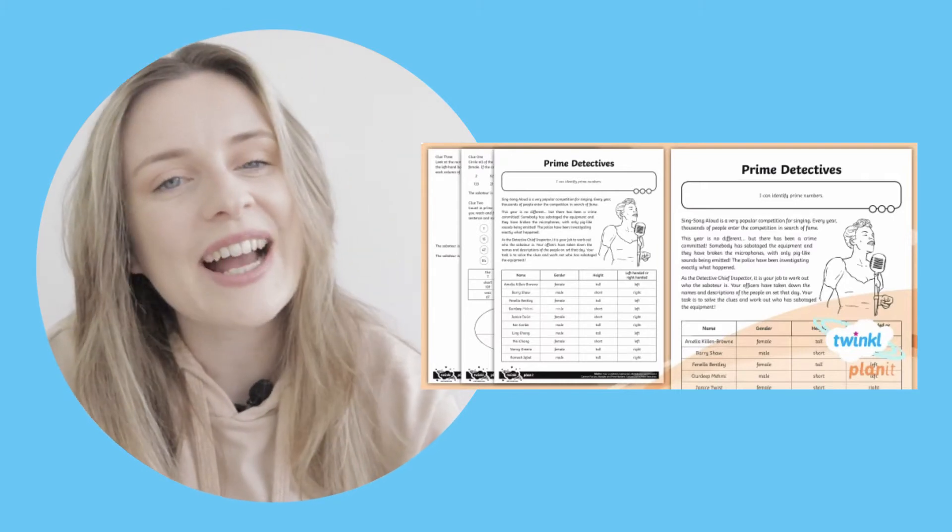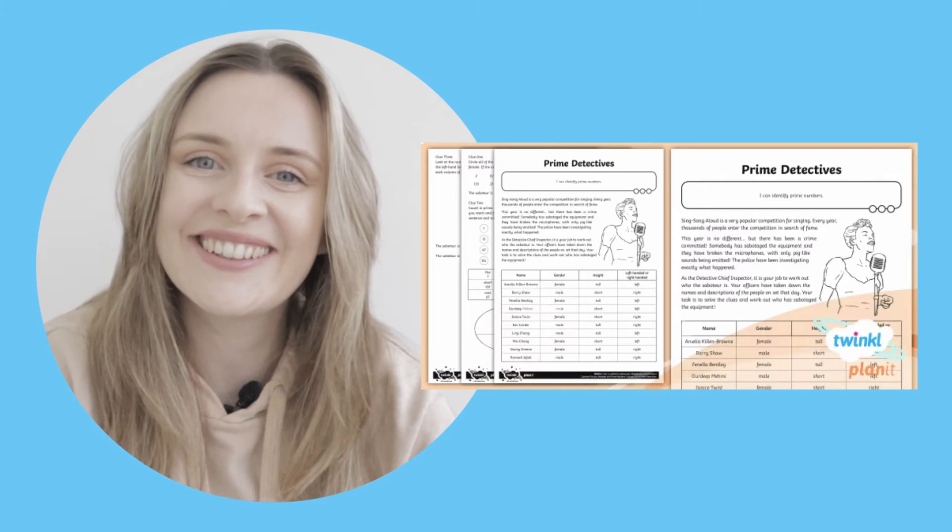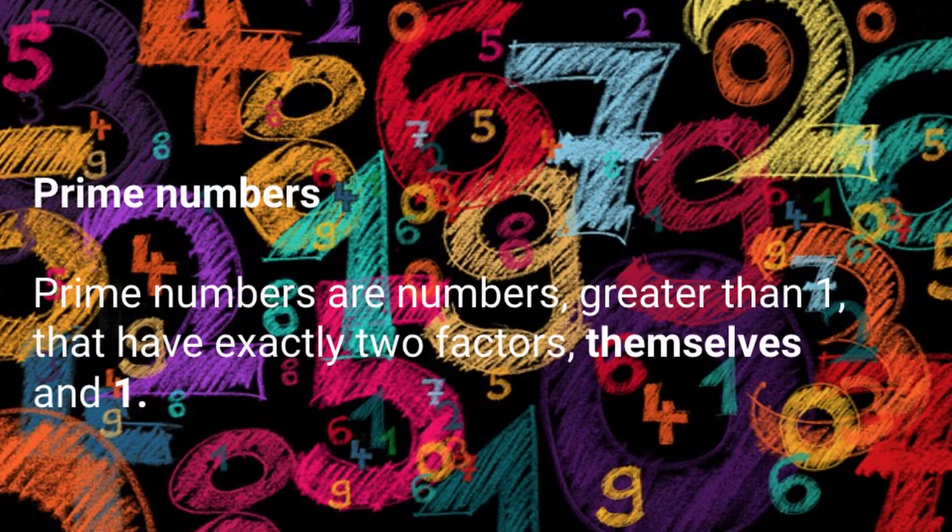First, let's take a look at what prime numbers are. Prime numbers are numbers greater than one that have exactly two factors, themselves and one.